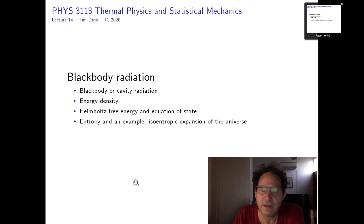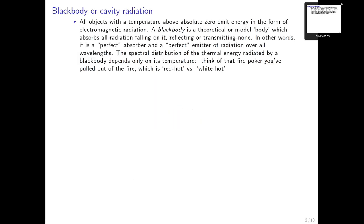Last time I discussed black body or cavity radiation at the end of lecture. All objects are essentially black bodies — they absorb and emit radiation. A black body is an ideal system that absorbs all radiation falling on it, so it's a perfect absorber and also a perfect emitter of radiation over all wavelengths or frequencies. The spectral distribution — how much energy in a small interval of frequency or wavelength — only depends upon the temperature.